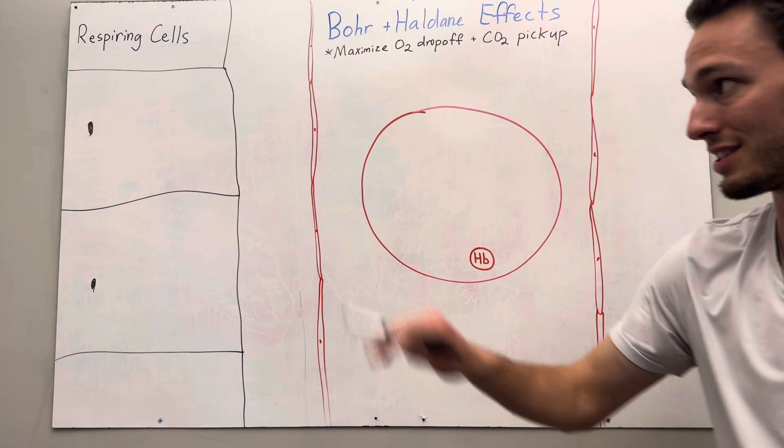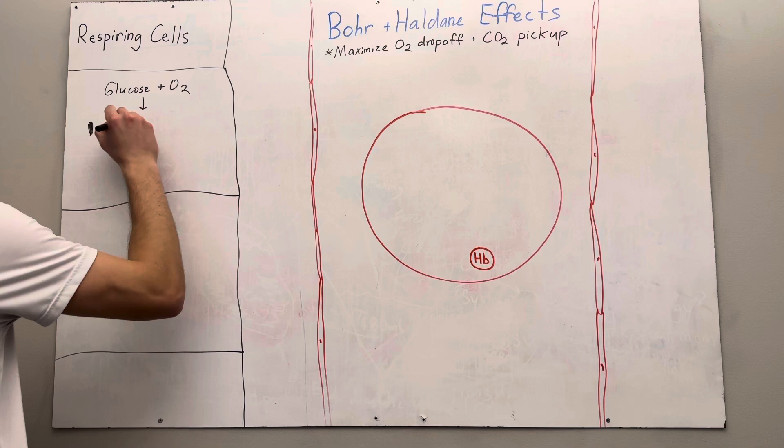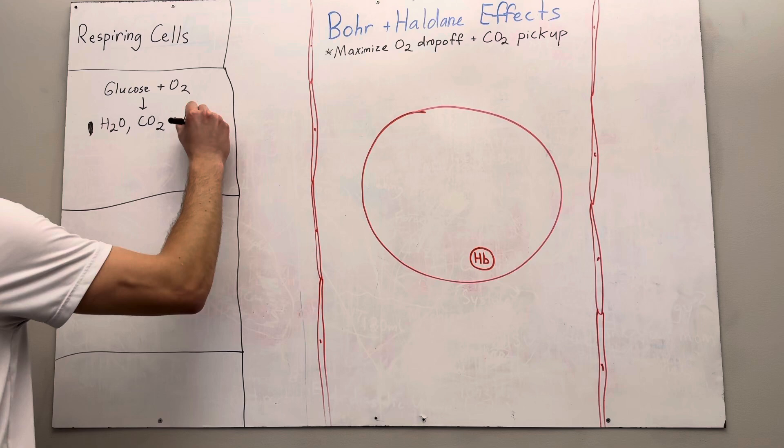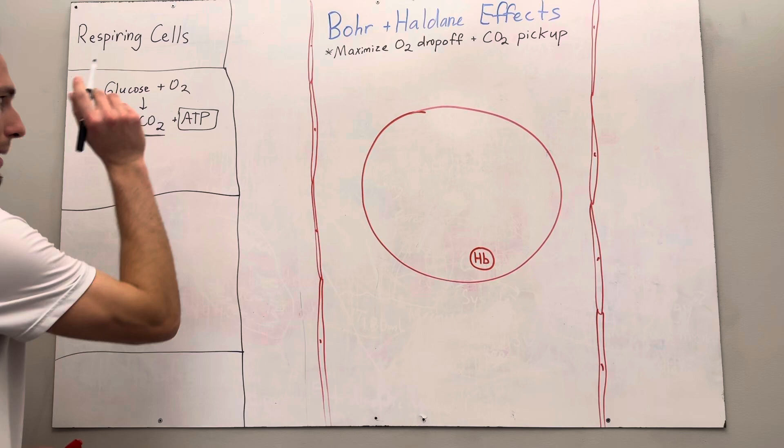So first off, I mentioned a couple things. These cells over here, any cell in your body needs energy. The way it makes energy is it combines glucose and oxygen, does some chemical reactions and creates a couple things: water, CO2, and ATP. Now the goal of this process of cell respiration is to produce this ATP, but we also make this byproduct carbon dioxide that can be dangerous in high numbers.